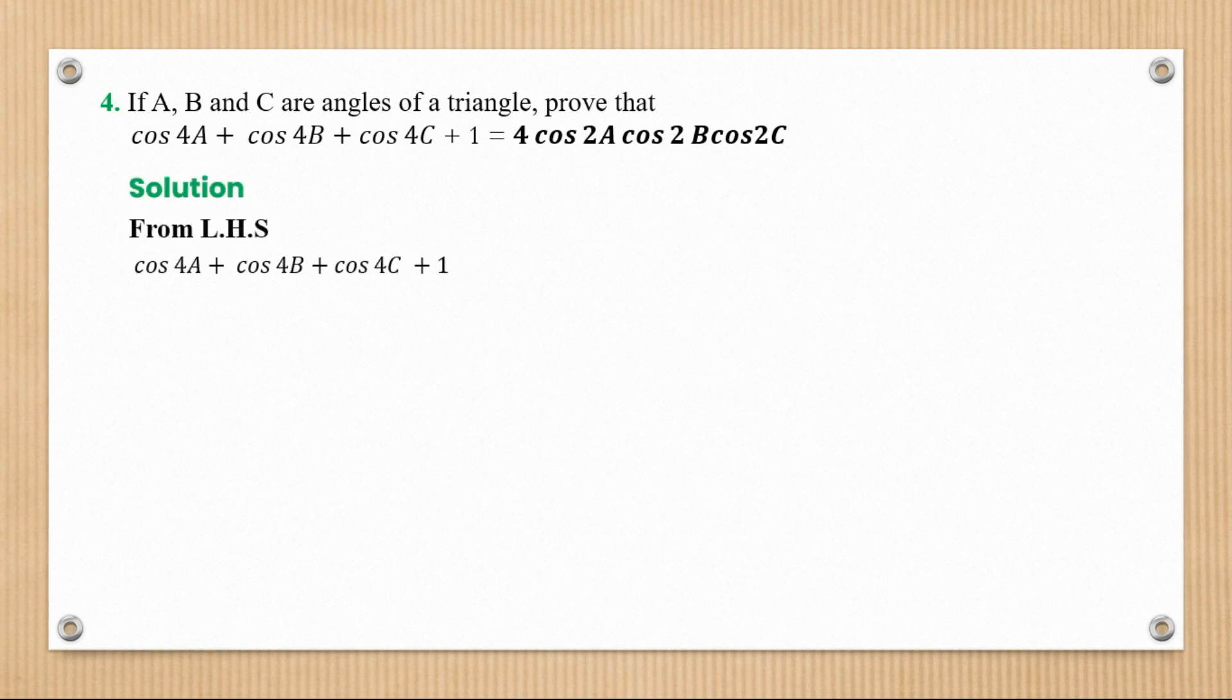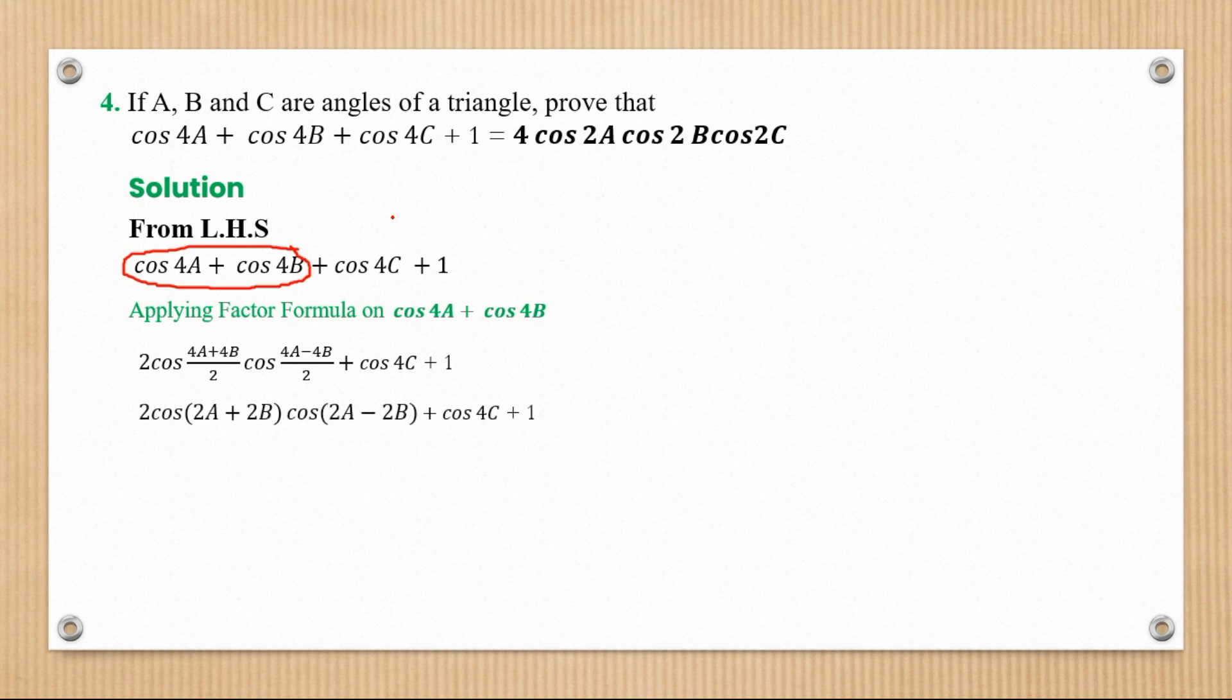From the left-hand side, we're going to apply the factor formula. Applying the factor formula, we end up with 2 cos cos. The 2s and 4s will reduce.